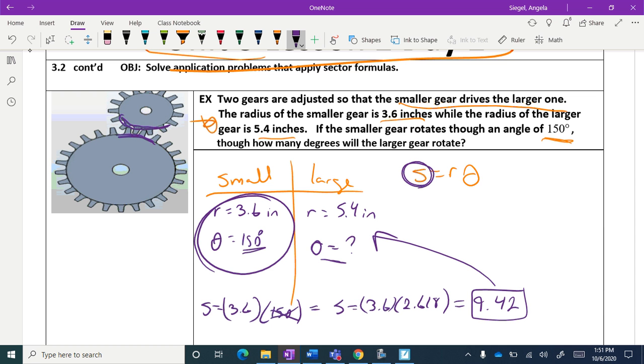Bring those together to get 9.42. Remember, the s for the small is equal to the s for the large.